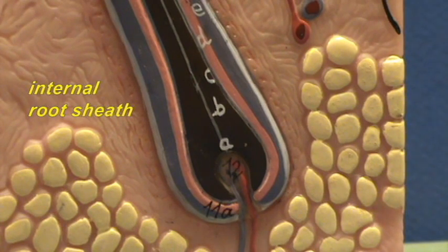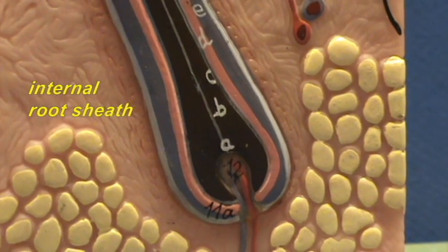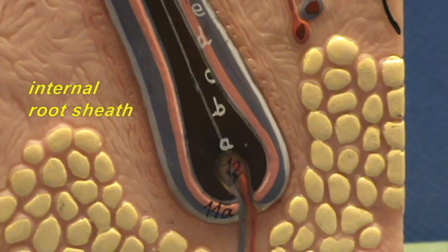The internal root sheath is a part of the follicle which is in direct contact with the hair and it's labeled D right over here in this model. Pink in color.